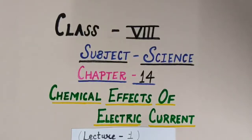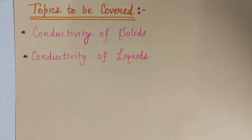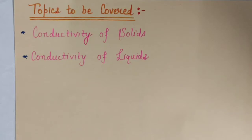Good morning students. I hope you all are fit and fine. This is a video for the students of class 8th, subject science. Today we will start a new chapter — Chapter number 14, that is Chemical Effects of Electric Current. This is your lecture number 1. Topics to be covered in this lecture are: first, conductivity of solids, and we will do some activities to check whether the given material is conductive in nature or not. Next is conductivity of liquids.